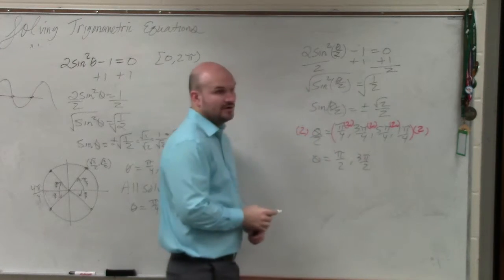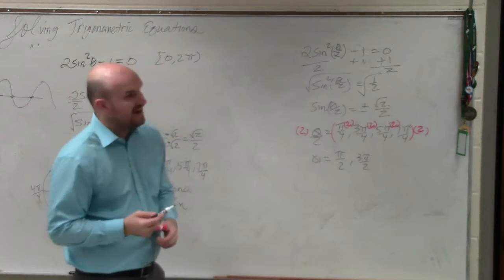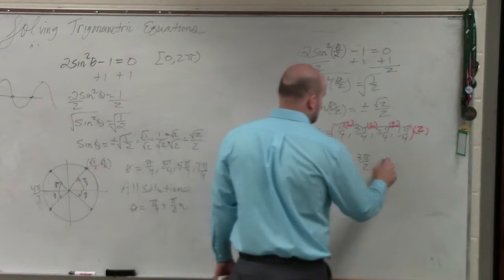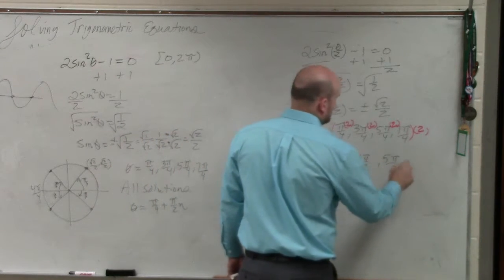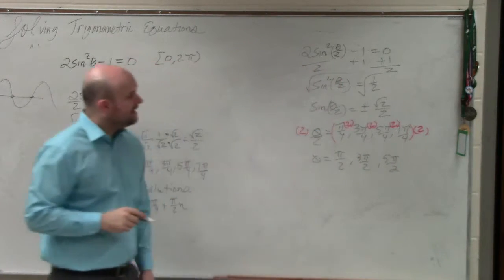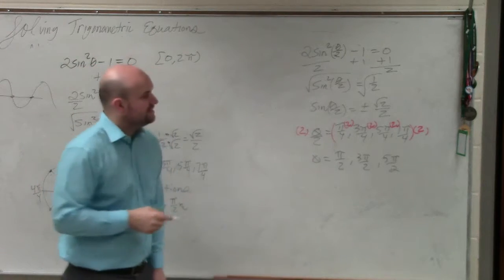This would be 10 pi over 4, which would be 5 pi halves. And this would be 14 pi over 4, which would be 7 pi halves.